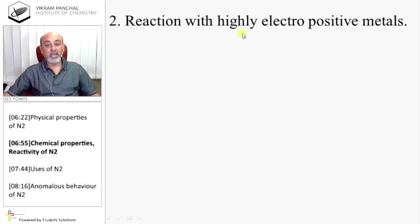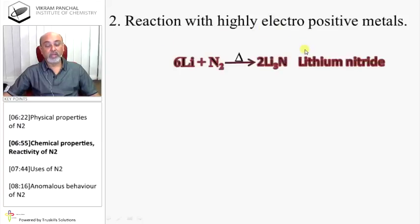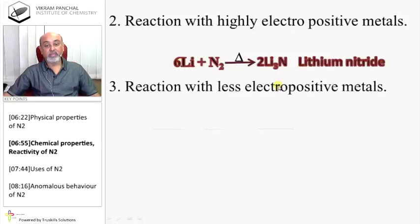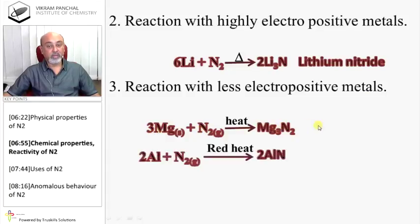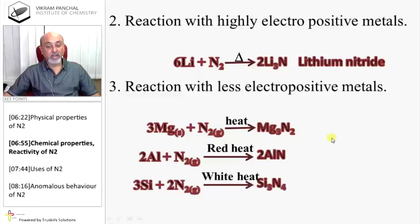Chemical properties and reactivity of nitrogen: Reaction with highly electropositive metals like lithium on heating gives lithium nitride. Reaction with less electropositive metals: magnesium on heating with nitrogen gives magnesium nitride. Aluminum when heated at red hot gives aluminum nitride, and white heat with silicon produces silicon nitride.